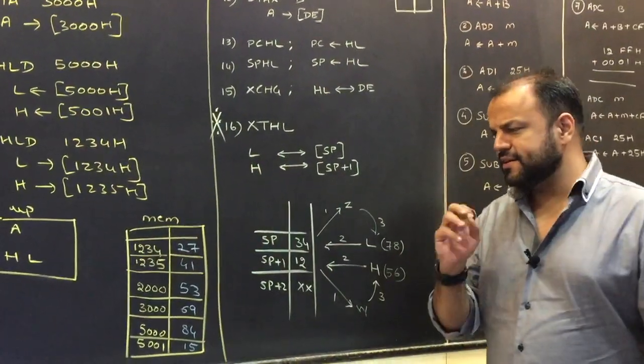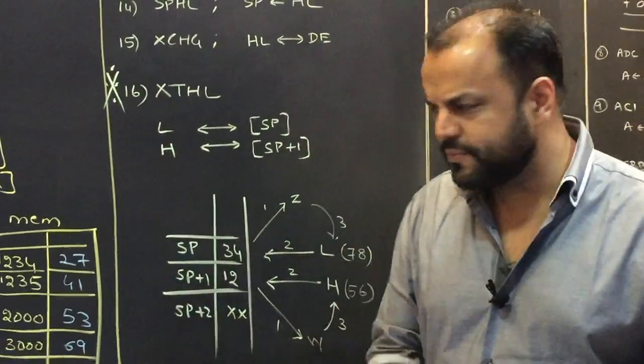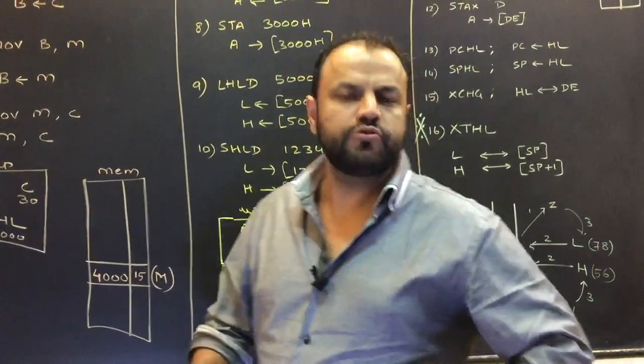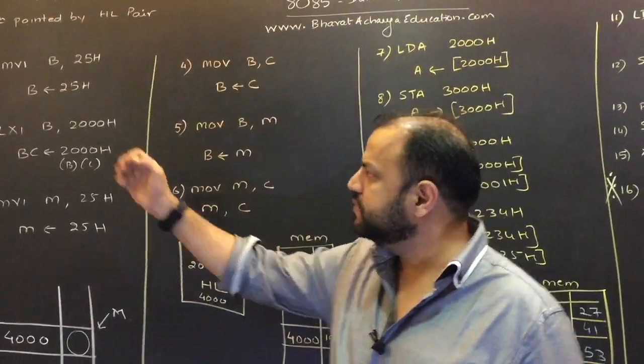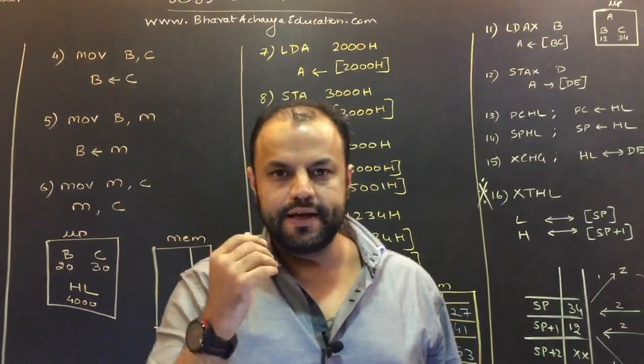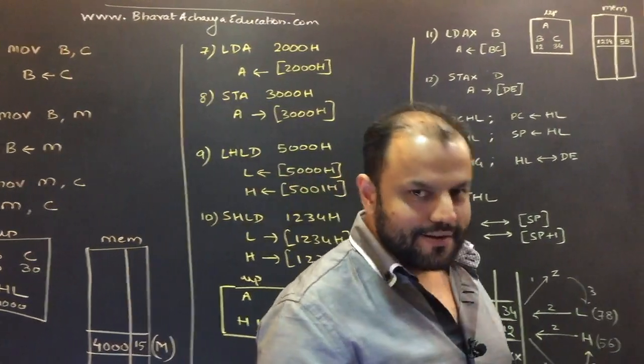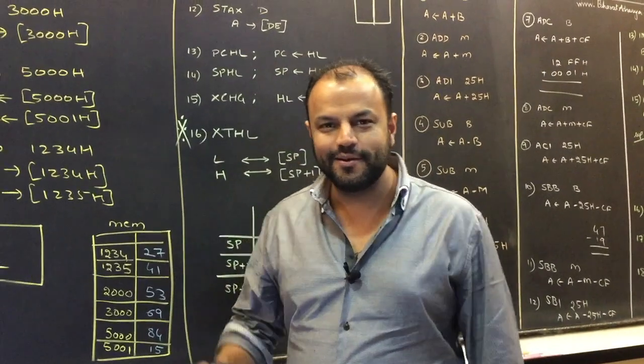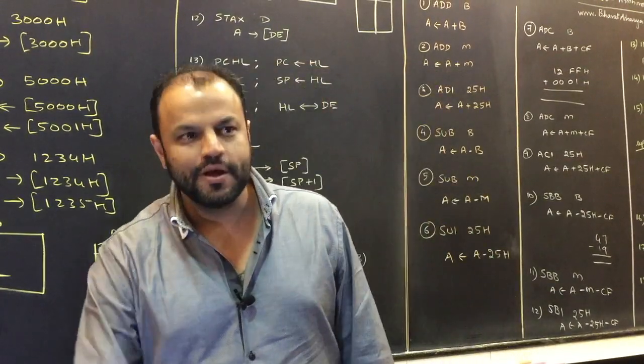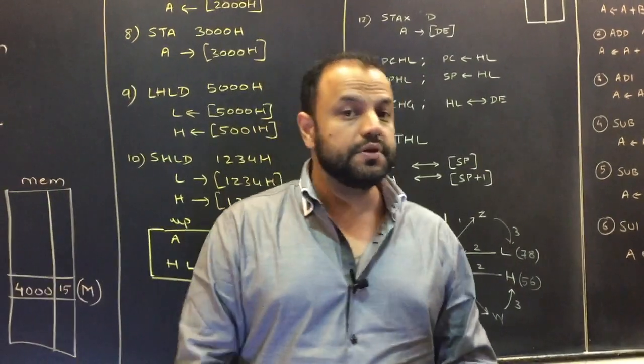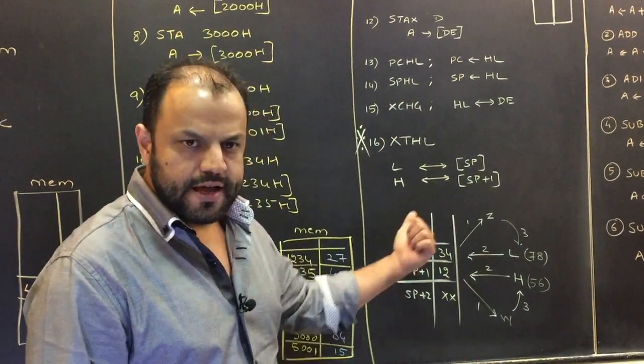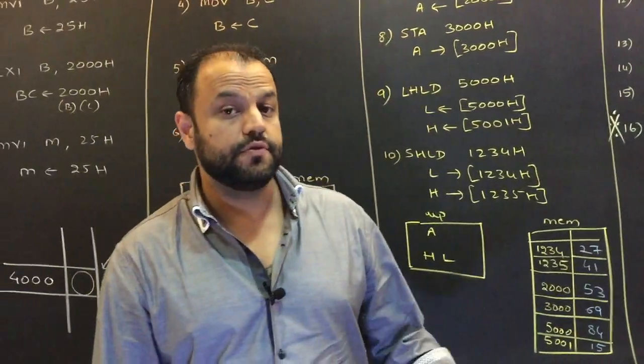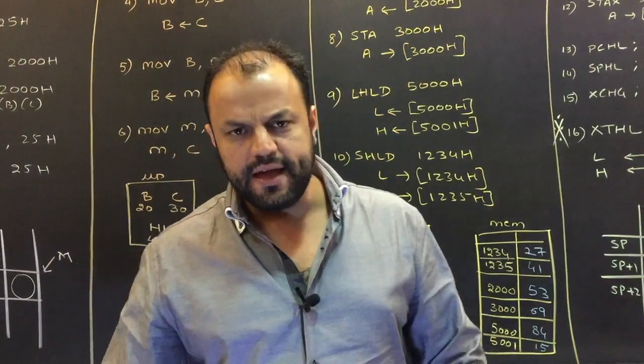Look at this one, XTHL. Pretty crazy instruction. A kind of a favorite from exam point of view because you cannot guess. See, no matter how smart a person is, anybody looking at move B, C or MVI B, 25, even without studying can figure out what it does. I mean, if you can't figure out that, then there is a real problem. Those are really obvious instructions. But something like XTHL, you may be the smartest kid in the world. But if you don't know what this instruction does, you can't figure it out. So there are some instructions which are obvious. There are some instructions which require a lot of understanding. So I'm going to teach you. I'm going to spend good time on XTHL. I'm going to teach you with a diagram, with an example, how it works. And there are programs where you need to use XTHL. So if you know how it works, you'll know the correct place to use it in a program. Anyway, so that's what we're going to do.